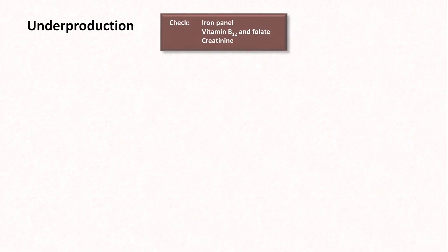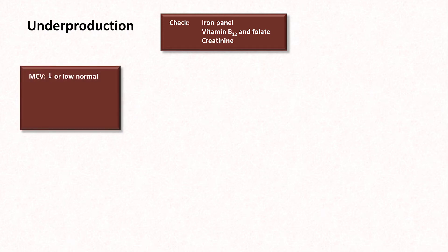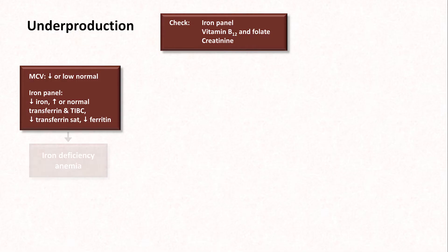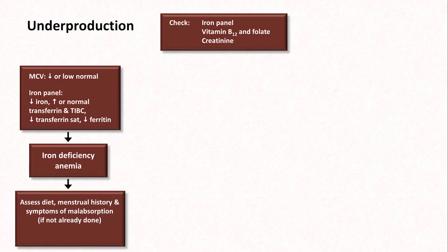Now let's take a look at underproduction and hemolysis separately. Once probable underproduction has been identified, the next step is to look at the iron panel, vitamin B12 and folate levels, and a creatinine. If the MCV is low or low normal, and the iron panel shows the combination of low iron, high or normal transferrin and TIBC, low transferrin SAT, and low ferritin, the patient has iron deficiency anemia. The next diagnostic step would be to figure out why — assess the diet, menstrual history, and symptoms of malabsorption. In any patient who is not a menstruating woman, a colonoscopy plus or minus an EGD is usually indicated to rule out occult GI malignancy or other process that could lead to chronic subclinical GI blood loss.